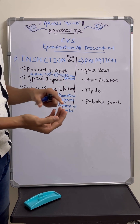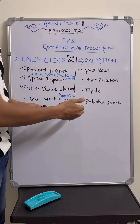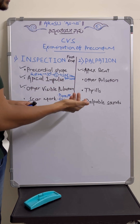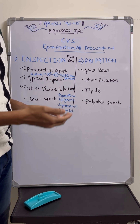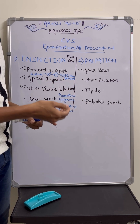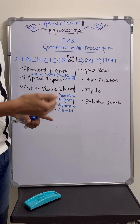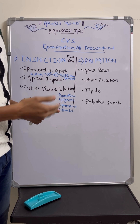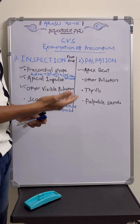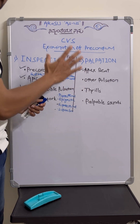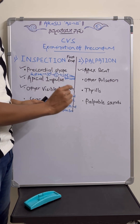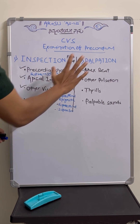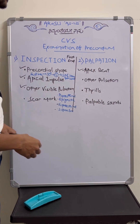Then comes palpable sounds. Commonly we consider palpable P2 in case of pulmonary hypertension — use the tips of the fingers and feel for P2 at the left second intercostal space. Palpable A2 is seen in aortic stenosis, and palpable S1 in mitral stenosis. Practically, just observe for palpable P2 in case of pulmonary artery hypertension. This is about inspection and palpation.